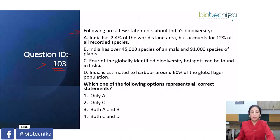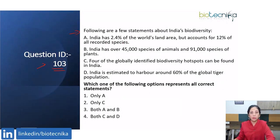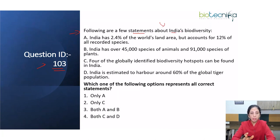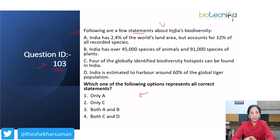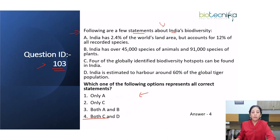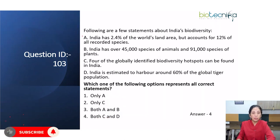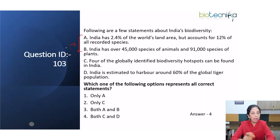Now let us move to question ID number 103. This question is related to biodiversity in India. Four statements have been given, and we have to choose the combination of correct statements. The right answer is option 4, meaning statements C and D are correct. Let us find out why they are correct and why statements A and B are incorrect.